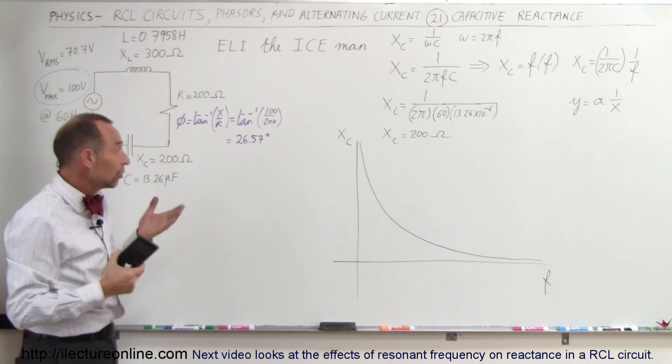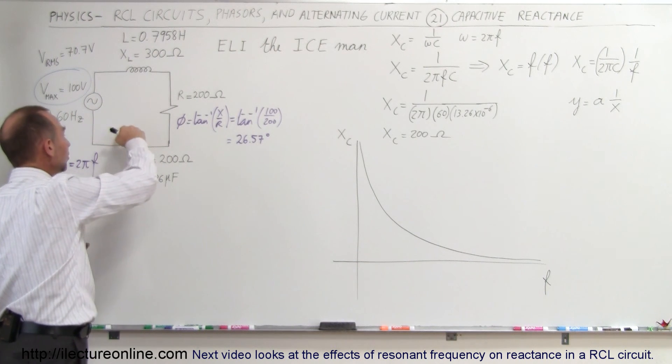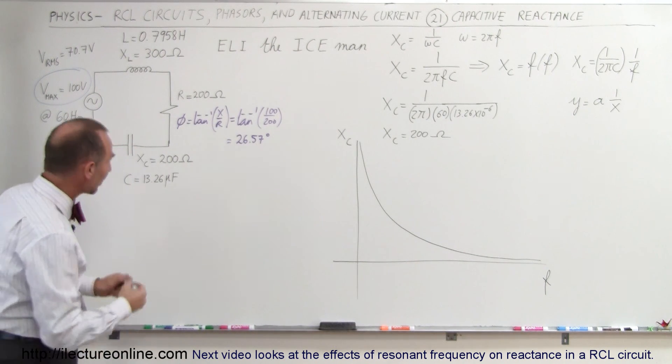So why does it do that? Well, a capacitor stores energy. As current flows in one direction, charges build up on one side. Let me illustrate that. Say the current flows in this direction.